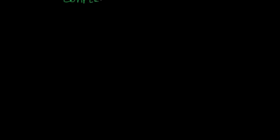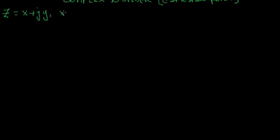Welcome to this new series on complex analysis. Today we will start talking about complex numbers, and in particular we will have a look at the simplest representation of a complex number: the Cartesian form. A complex number in Cartesian form is represented as z, where z equals x plus j·y, and x and y are real numbers while j is the imaginary unit.